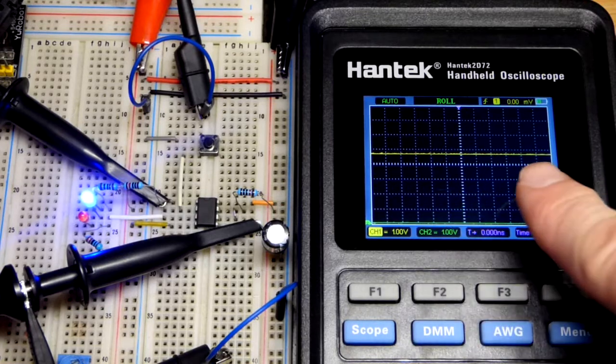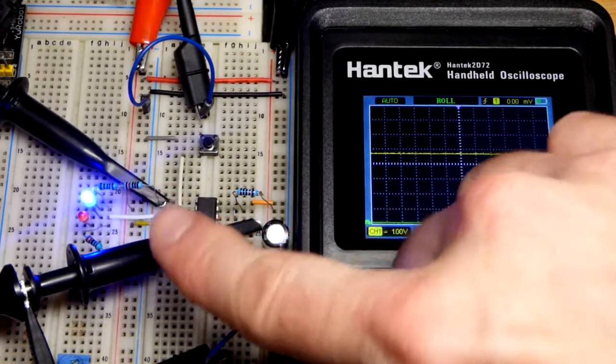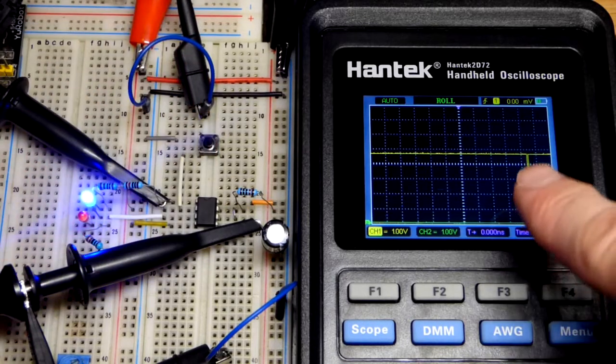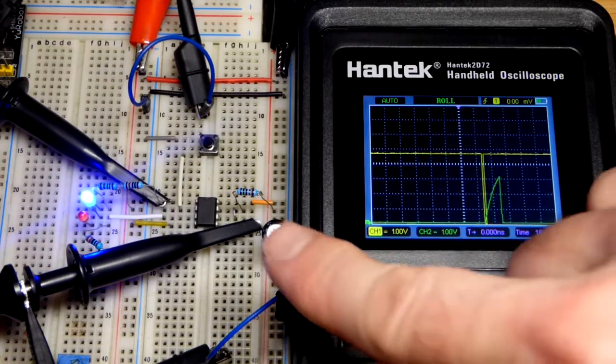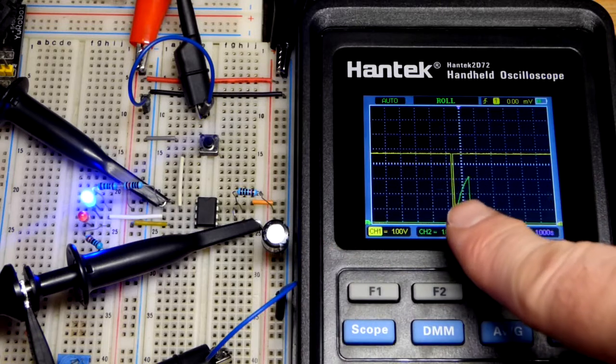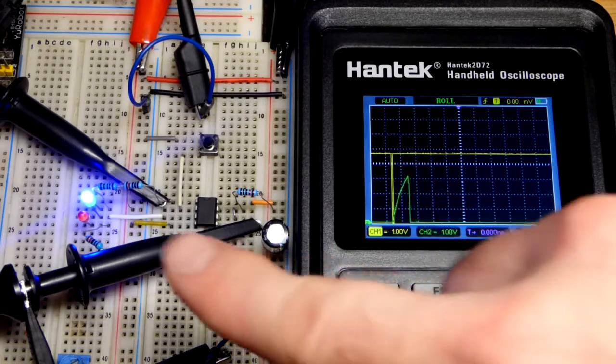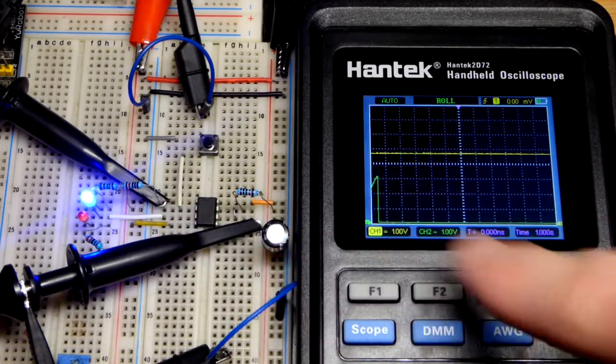Here you can see the input voltage. We have a pull-up resistor holding about five volts there until we press the switch and give a low pulse. You can see the capacitor charging. When it gets to two-thirds of the supply voltage, then the output goes back low and the capacitor instantly discharges.